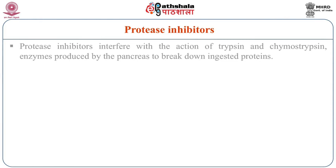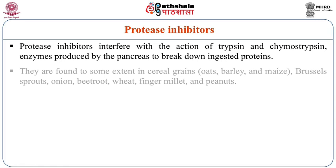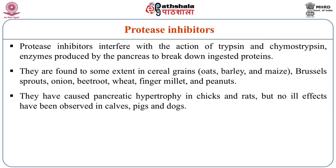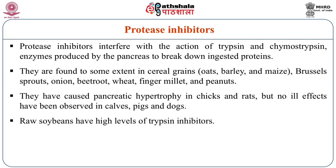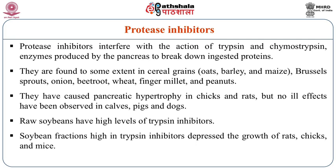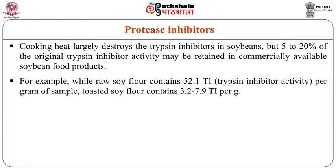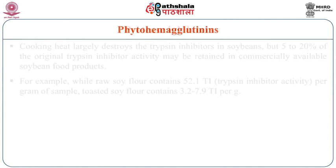Protease inhibitors interfere with the action of trypsin and chymotrypsin, enzymes produced by the pancreas to break down ingested proteins. They are found to some extent in cereal grains like oats, barley and maize, and also in Brussels sprouts, onion, beetroot, wheat, finger millet and peanuts. They are supposed to cause pancreatic hypertrophy in chicks and rats, but no ill effects have been observed in higher-grade animals and mammals. Raw soya beans have high levels of trypsin inhibitors, and soya bean fractions high in trypsin inhibitors depress the growth of rats, chicks and mice. Cooking with high temperature largely destroys all the trypsin inhibitors in soya beans and almost all the protease inhibitors.